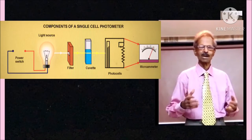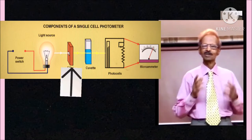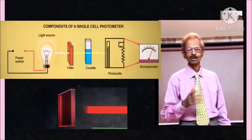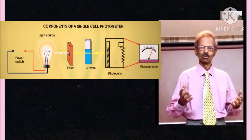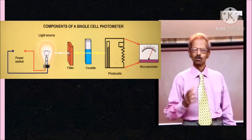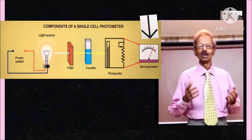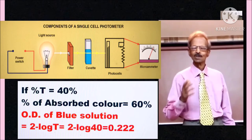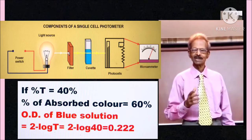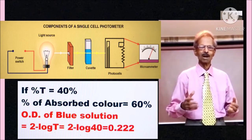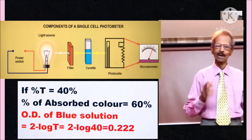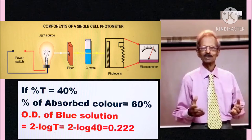Now take example of principle of a photometric unit in which red filter is used and solution in cuvette is blue. When white light is passed through the red filter, red band of light will pass through blue solution. Blue solution will absorb red light according to its concentration and some light is transmitted. This transmitted light T can be measured on the galvanometer. If galvanometer reads 40%, that means 60% light is absorbed. By using formula 2 minus log T, 40% T can be converted to 0.222 optical density.